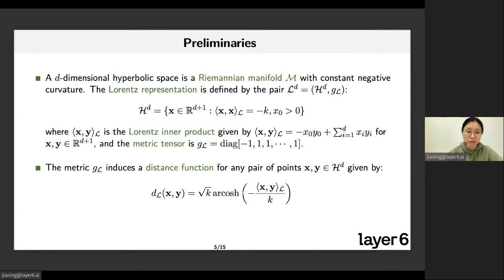Firstly, a d-dimensional hyperbolic space is a Riemannian manifold with constant negative curvature. A Lorentz representation can be defined on the hyperbolic space as the following formula. With the inner product of a point on the hyperbolic space equals the curvature. g_L denotes the metric tensor on the hyperbolic space. With the metric tensor, we can calculate the distance of any pair of points x and y on the hyperbolic space by the following formula.